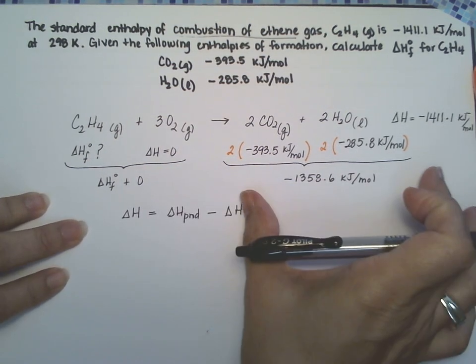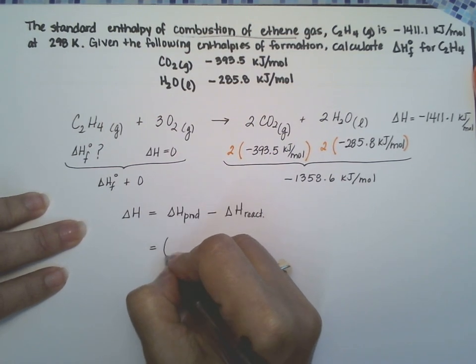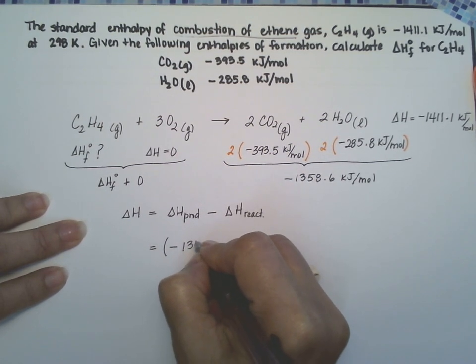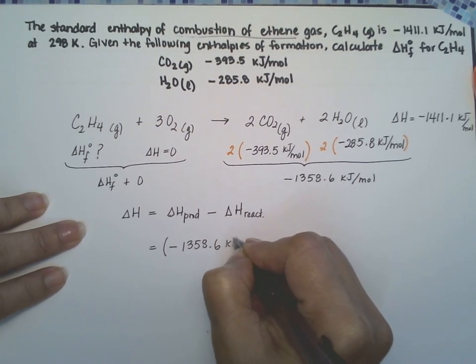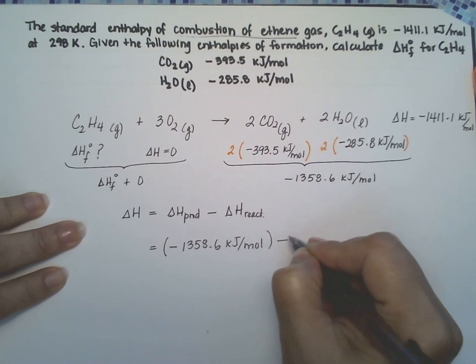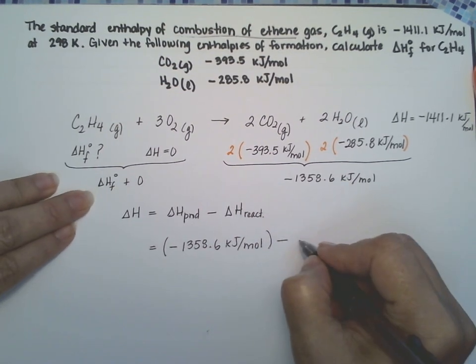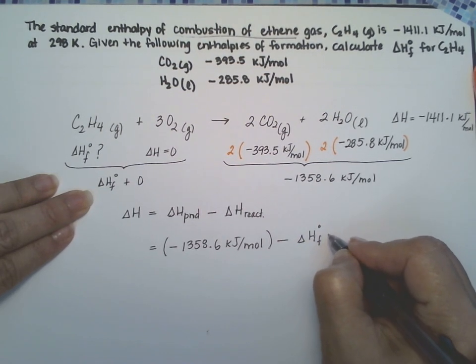Okay so I'm going to substitute this number for the delta H of the products per mole minus this one right here, the delta H of formation of ethene.